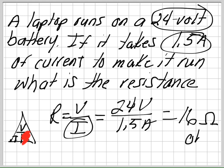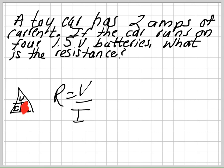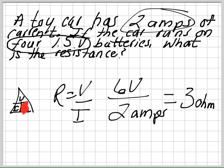which gives you 16 ohms. Last problem: a toy car has 2 amps of current. If the car runs on four 1.5-volt batteries, what is the resistance? We use R equals V divided by I. The voltage is four times 1.5, which equals 6 volts, divided by 2 amps — giving a resistance of 3 ohms.